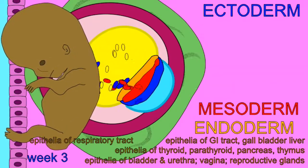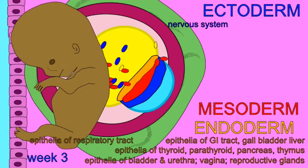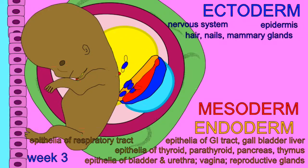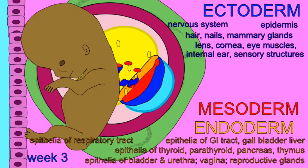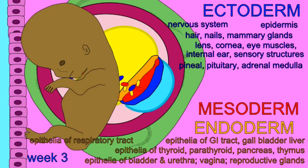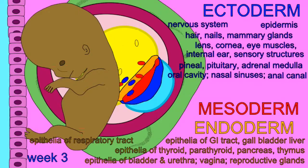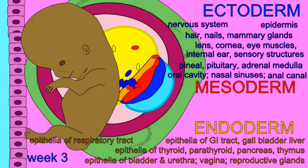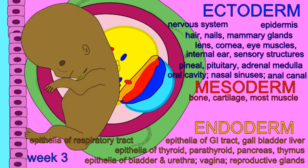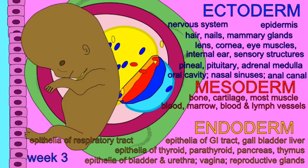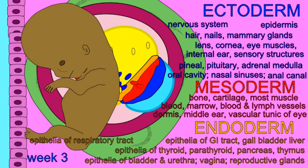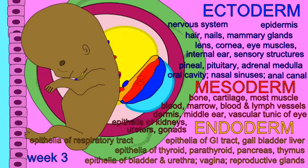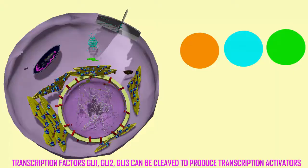How do they know to turn on only the liver genes or only the nerve genes? How does differentiation in embryonic development occur? Proteins can bind to DNA and activate transcription — turning on genes — or repress transcription and turn off genes.